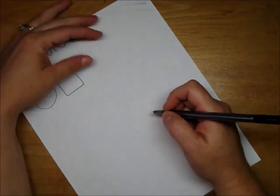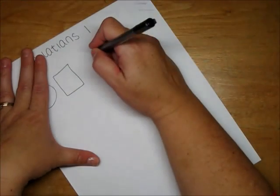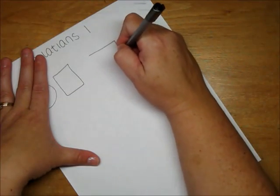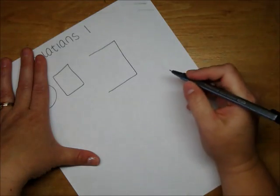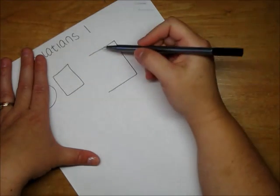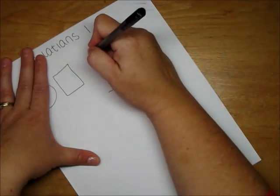The notebook paper sounds trickier than it really is. Basically you're going to be drawing a rectangle with three sides, and then down this third side you're going to make it look like it was ripped out of a spiral notebook.